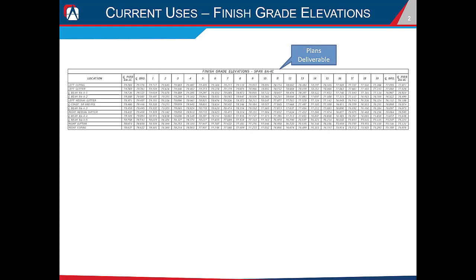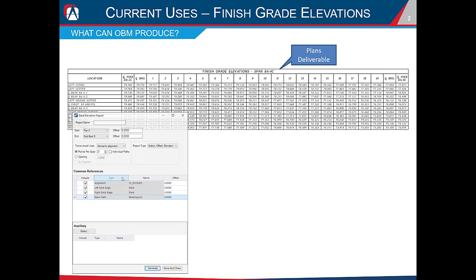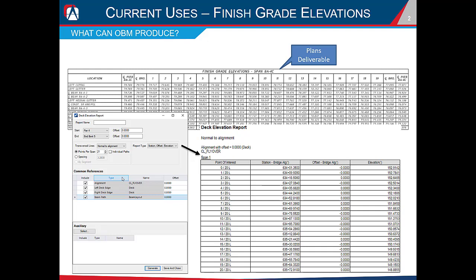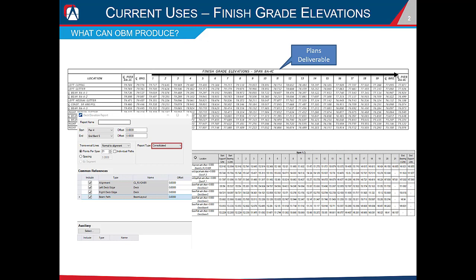One of the most obvious and easy uses of OBM is to generate our finished grade elevations. Up until a few versions ago, the only option was the station offset and elevation report, which lists elevation information in a vertical direction while our plan sheet deliverable is in a horizontal direction. This used to require manipulation in Excel using an array to transform the data. But now we have the consolidated report, which has the elevations going in the same direction as our plan deliverable, cutting out all the manual manipulation.